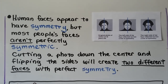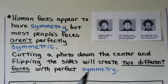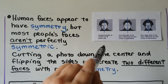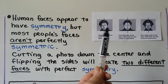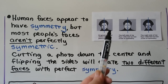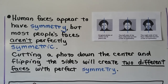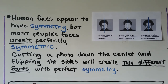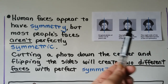Human faces appear to have symmetry, but most people's faces aren't perfectly symmetric. This is an actual photo of me when I was 19 years old — that was a long time ago. If I use a line of symmetry going right through the center of my face vertically, I can take two left sides or two right sides and create a whole new face. So cutting a photo down the center and flipping the sides will create two different faces with perfect symmetry, so my face is not symmetrical.